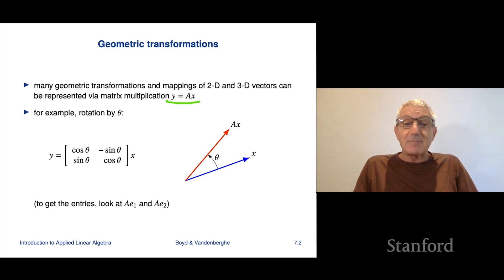Consider the mapping or transformation that rotates a vector by theta radians. So here's a vector x and it gets rotated over to theta radians. It's got the same norm, but it's been rotated by theta radians in the mathematically positive direction, that means counterclockwise. So that's a rotation mapping.